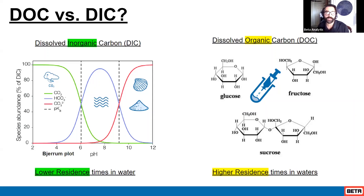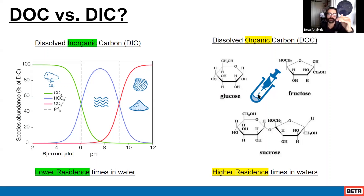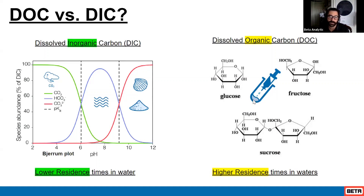Another way that people have defined organic carbon is by size. Here what I have shown is a syringe with a filter. There's a bit of range, but a 0.45 micron filter is a good boundary for what would define particulate carbons. What passes through the 0.45 micron filter would be our organic portion — things that you cannot easily filter out.